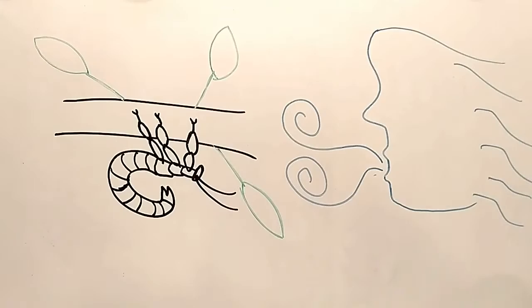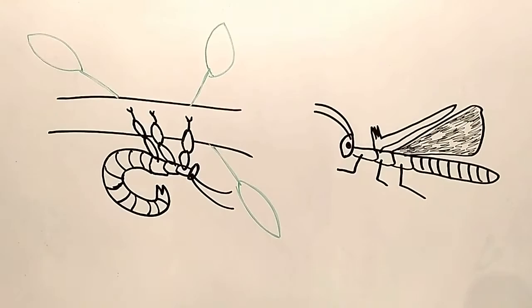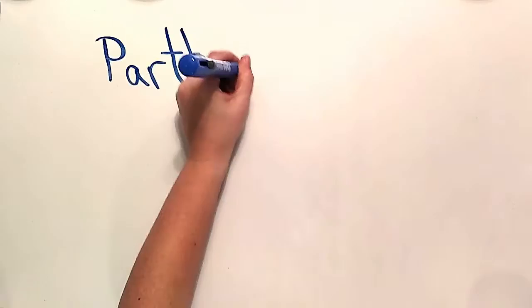The male walking stick actually has wings and can fly. He will fly until he finds a female to mate with. Although, the female can lay viable eggs with or without the male. The ability of a female animal to lay eggs without mating is called parthenogenesis.